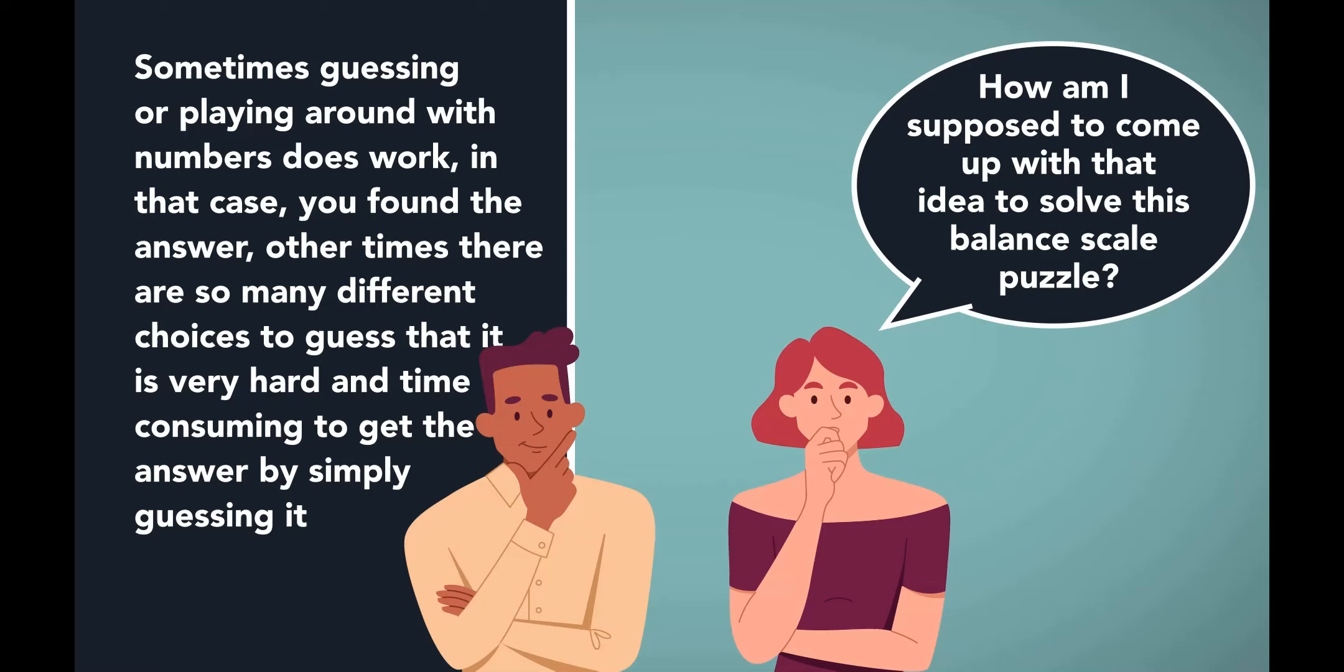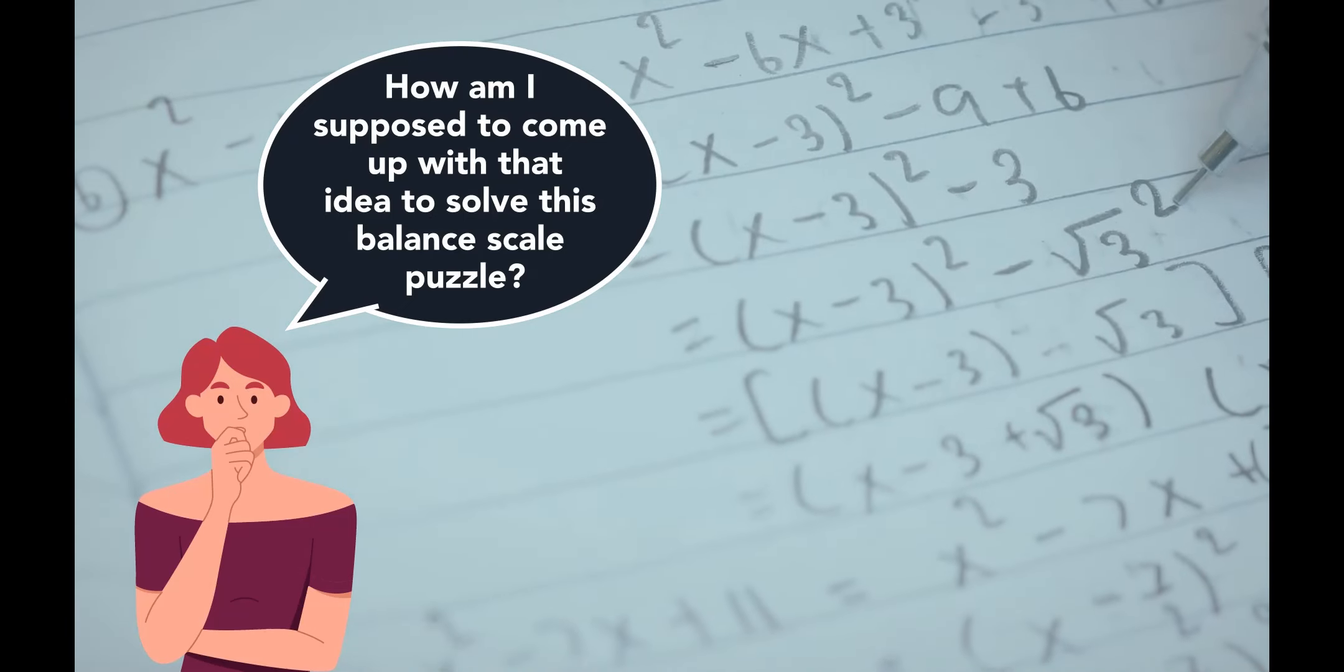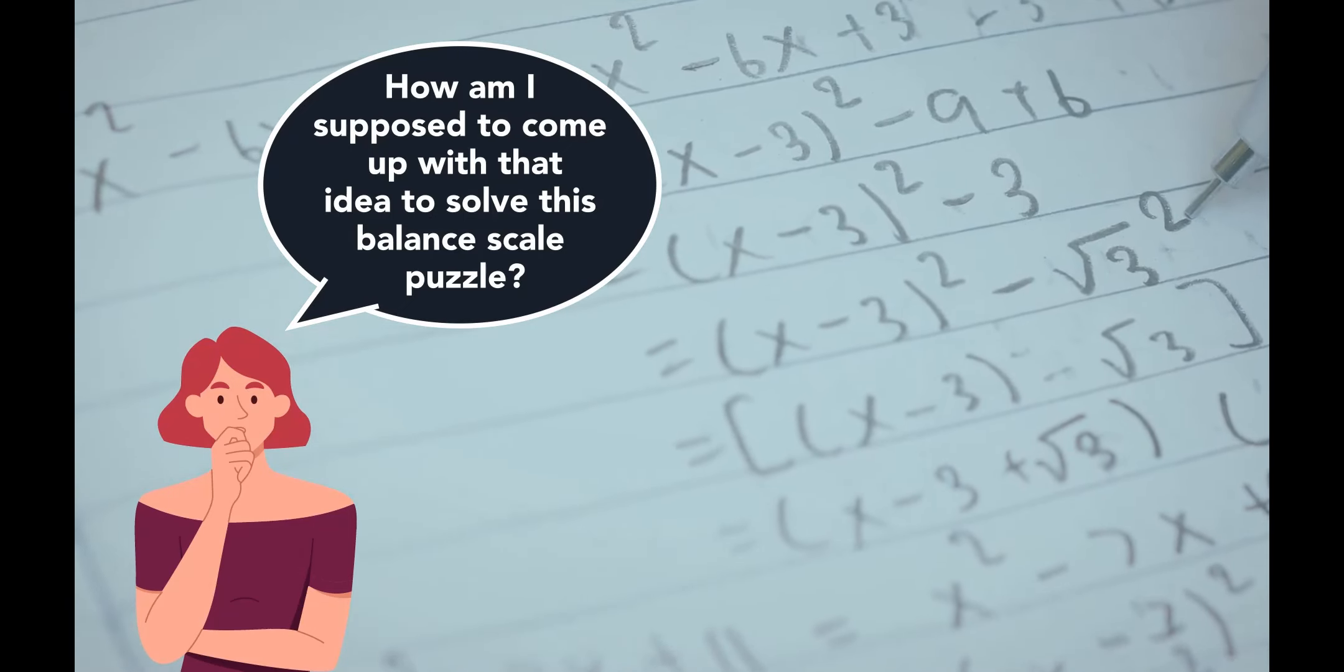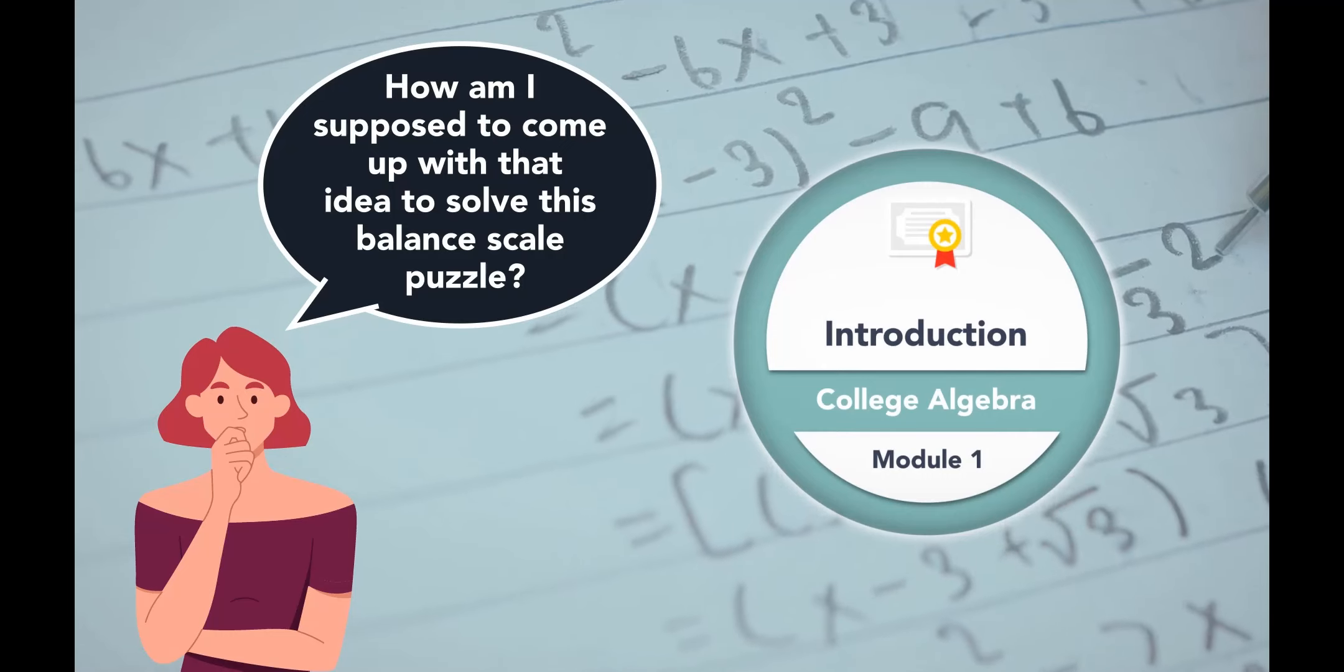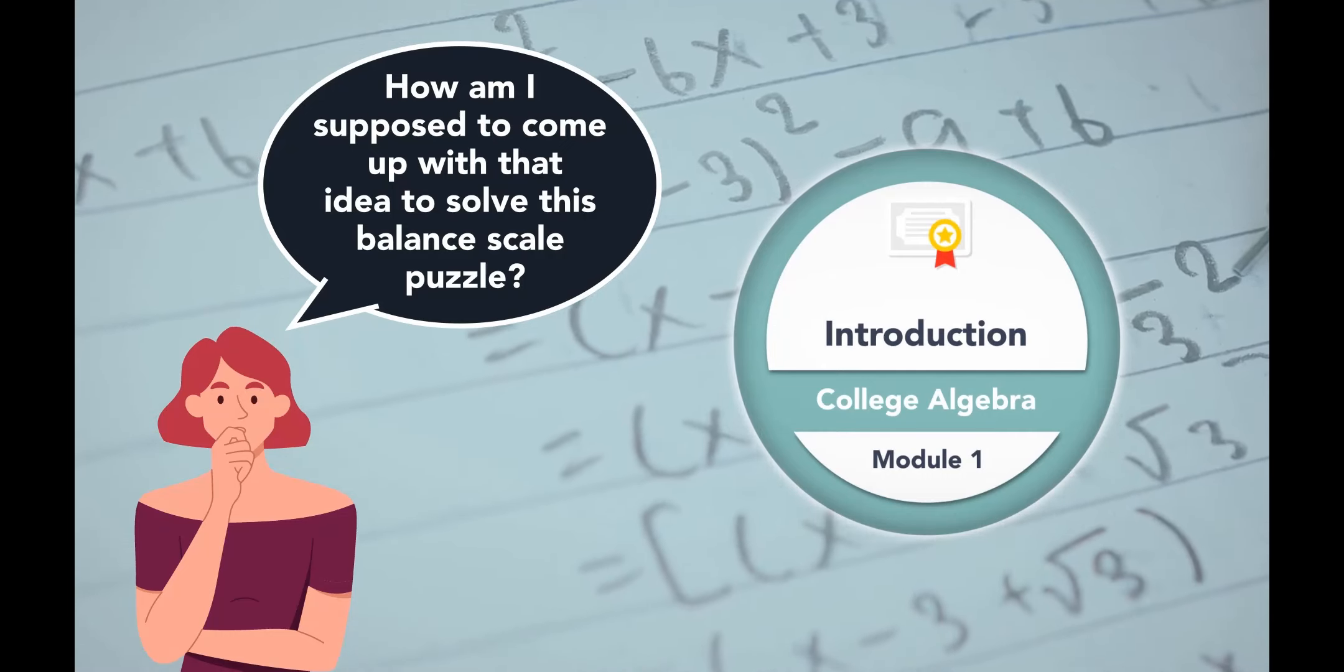The answer to the first question is that it's usually a bad strategy. Sometimes guessing or playing around with numbers does work, and in that case you found the answer. Other times there are so many different choices to guess at that you'll have a very hard time getting the answer by guessing at it. If we have a general method of approaching such questions, then we can get the answer pretty quickly. To answer the second question, that's exactly what this course is about. The course is to teach you algebraic thinking.